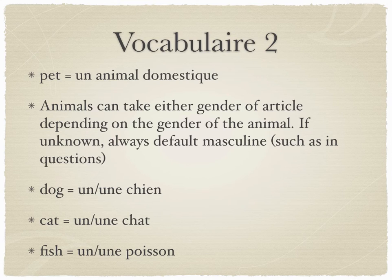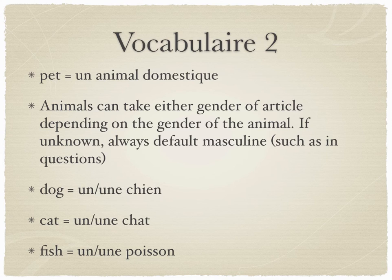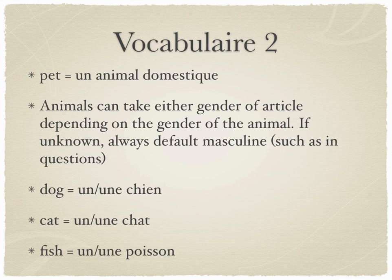Our actual words for each one of these animals can take the gender of either article — un or une — to match whatever gender the animal is, since the word itself doesn't actually change. The only difference between, for example, a male dog and a female dog is whether you use un or une. If you don't know the gender — such as if you're asking somebody 'do you have a dog?' — we're going to always default to the masculine. Whenever you look up these words they will say they're masculine words because that's the default. The only reason we would change to une would be if we know the particular animal and we know that it's a girl.